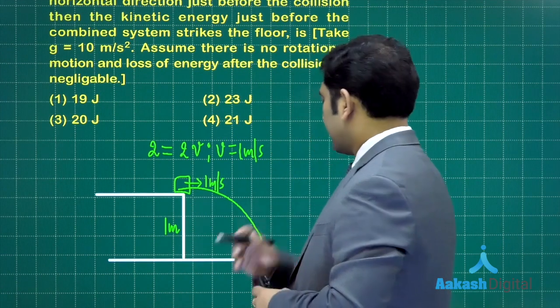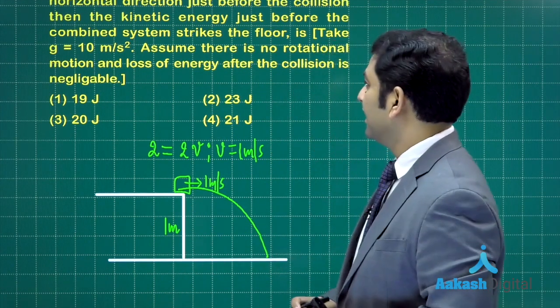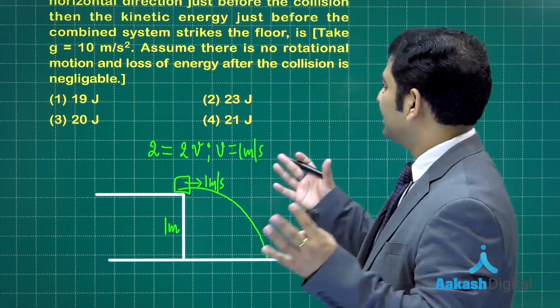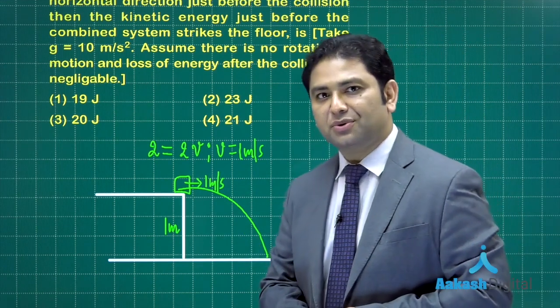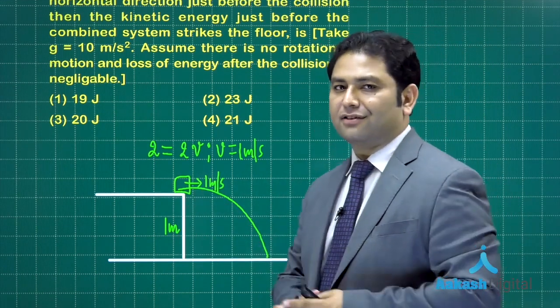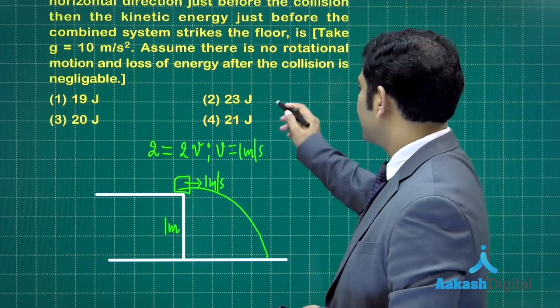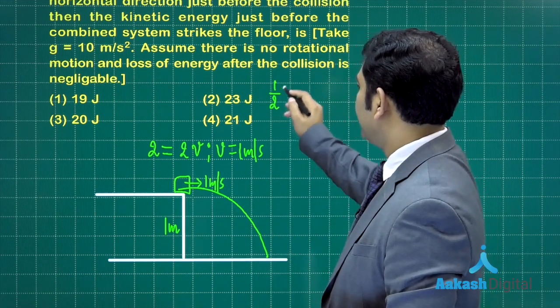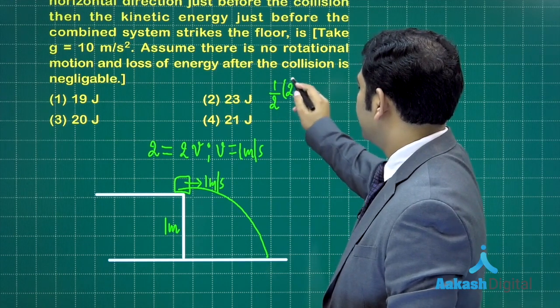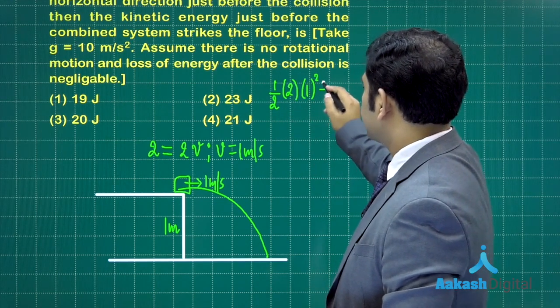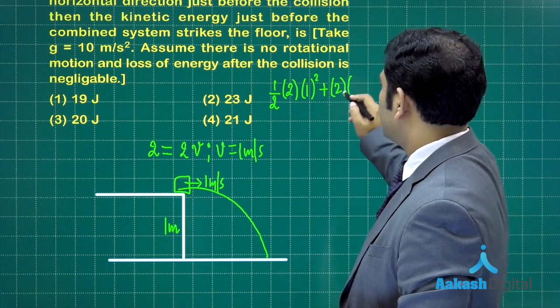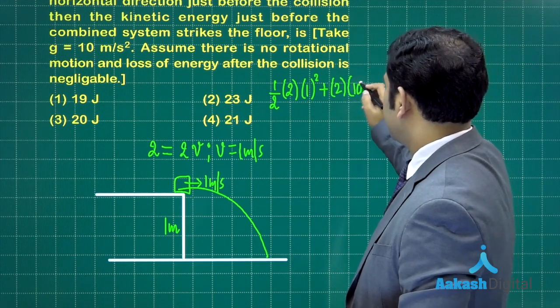This system will move parabolically and land here. Now we need to calculate the kinetic energy. It's a case of mechanical energy conservation. The initial kinetic energy is one half mass 2 kg times v square plus mass 2 times g, which is 10, times h, which is 1.